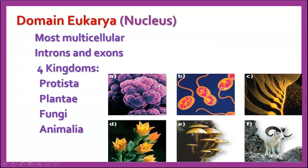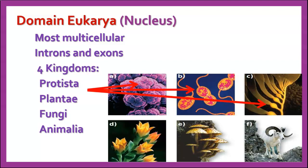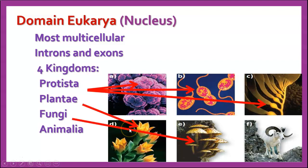Domain Eukarya — these all have nuclei and other membrane-bound organelles in their cells. Most of them are multicellular. They have both introns and exons in their DNA. There are four kingdom groups: the Protista — not really one kingdom, actually multiple kingdoms, probably four or five different kingdoms — and then we have the plants, the fungi, and the animals.